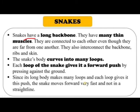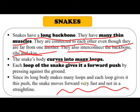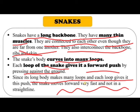Next is the movement of snakes. Snakes have a long backbone with many thin muscles connected to each other. These muscles also interconnect the backbone, ribs and skin. The snake's body curves into many loops, and each loop gives it a forward push by pressing against the ground.